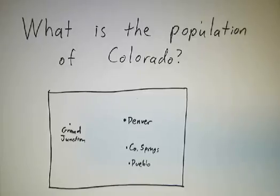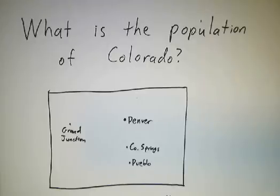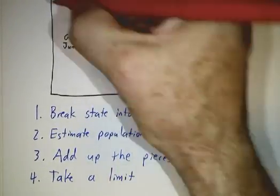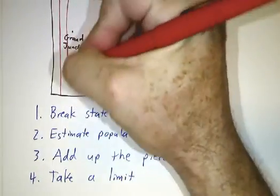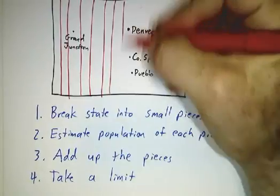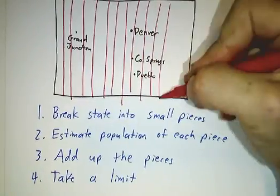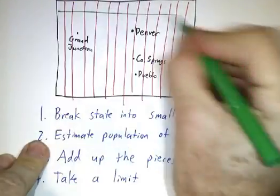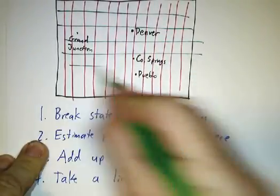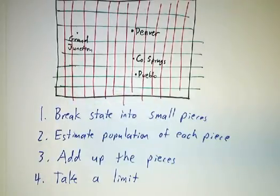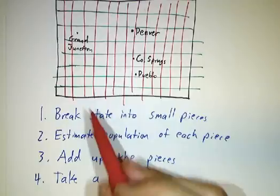The strategy is the exact same thing as in one-dimensional integrals: the whole is the sum of the parts. So we're going to break the state into small pieces. We slice it vertically and also horizontally, and now we've broken the state of Colorado — which was conveniently rectangular shaped — into a bunch of little blocks.